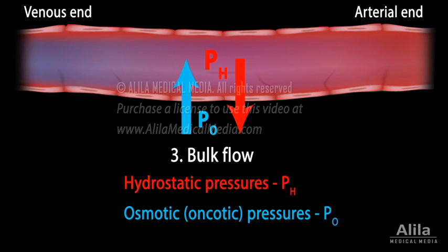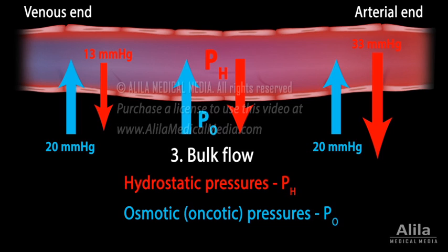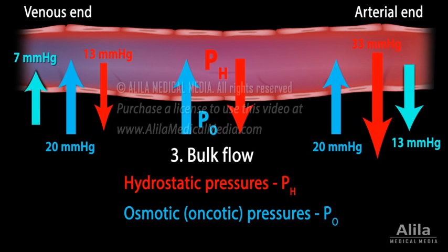Because the arterial end of a capillary bed is relatively closer to the heart than the venous end, capillary blood pressure and, by extension, hydrostatic pressure, is higher at the arterial end. With osmotic pressure remaining the same throughout, the balance shifts from net outward flow at the arterial end to net inward flow at the venous end.